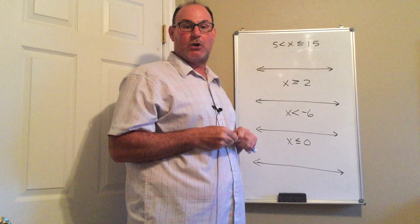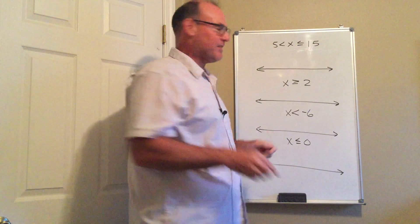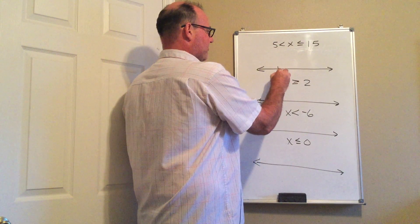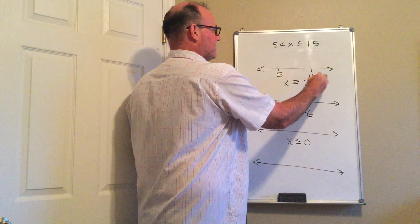So the numbers 5 and 15 are what we call the boundaries of this interval. So I'm going to have 5 here, I'm going to have 15 here.